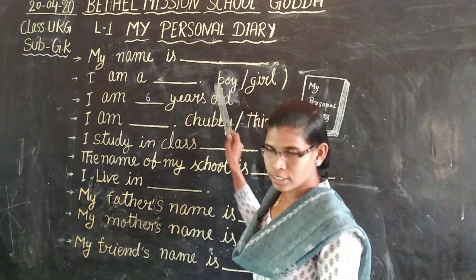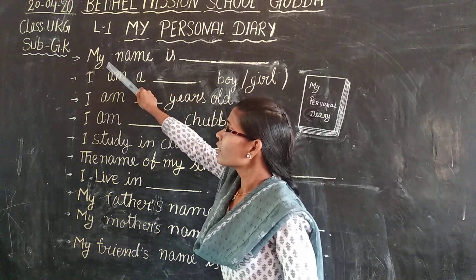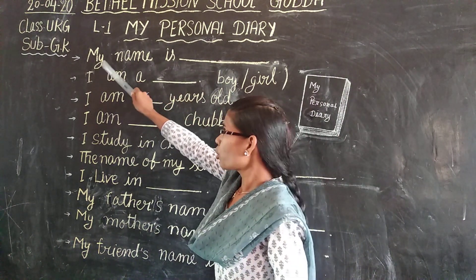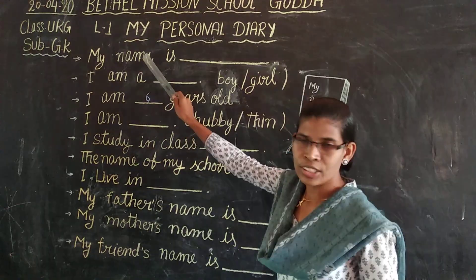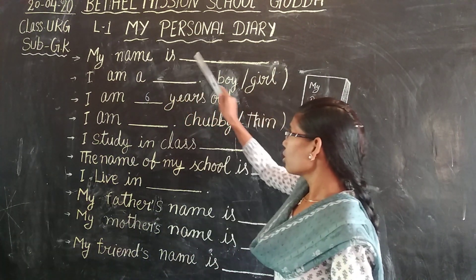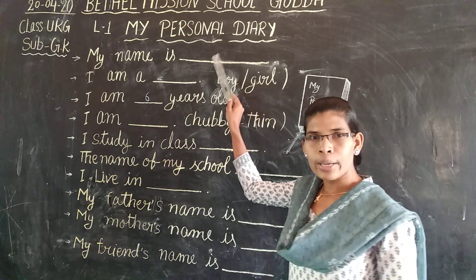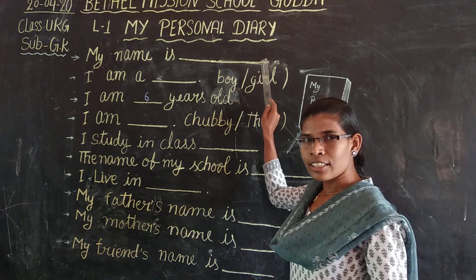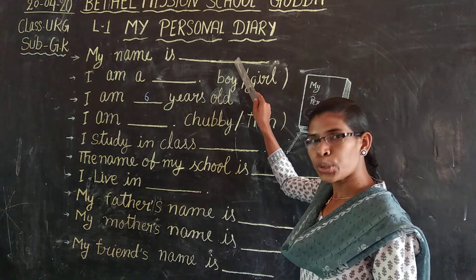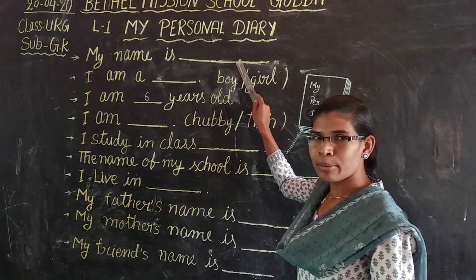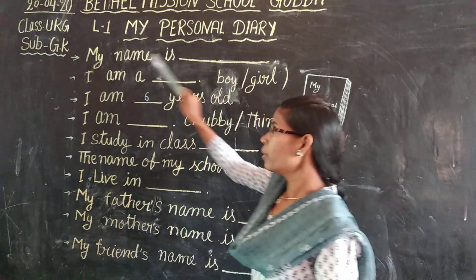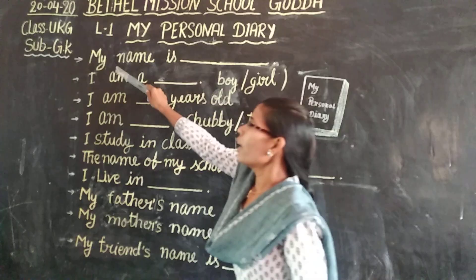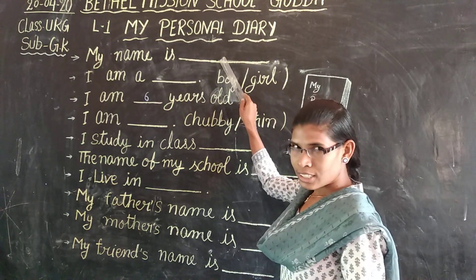So what are we going to write in the personal diary? In the first line, we will write our name. So here you have to write your name, children. Whatever your name may be — Rohan, Sita, Gita, anything — you have to write your name. My name is Rohan. My name is Gita.